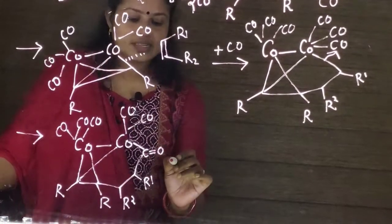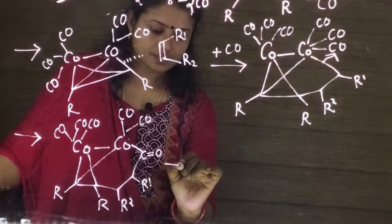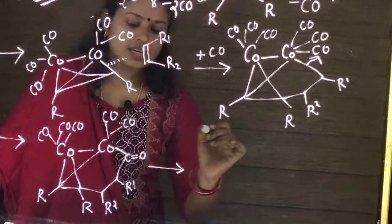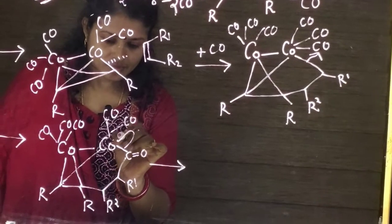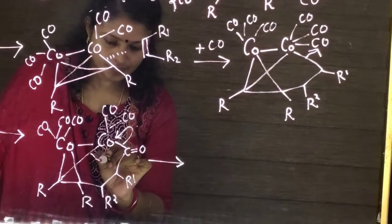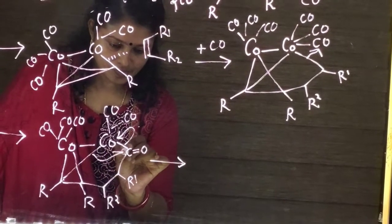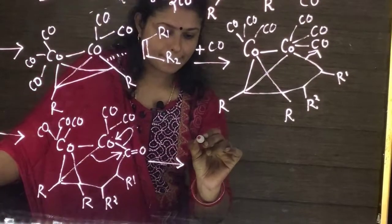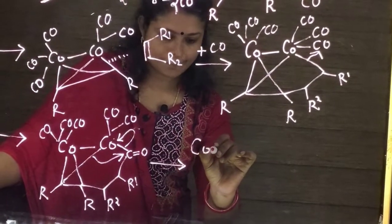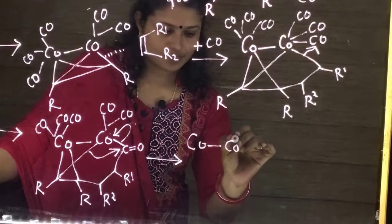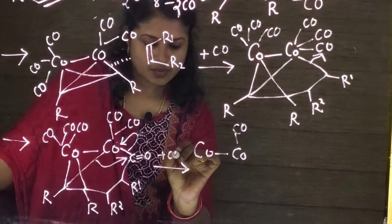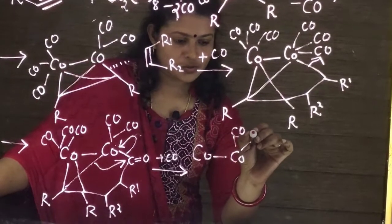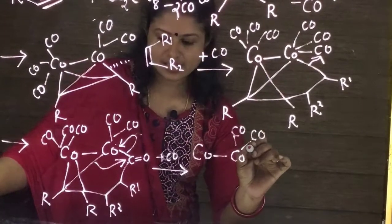So in the next step, reductive elimination takes place in which one more carbon monoxide is added in order to get 18 electrons.